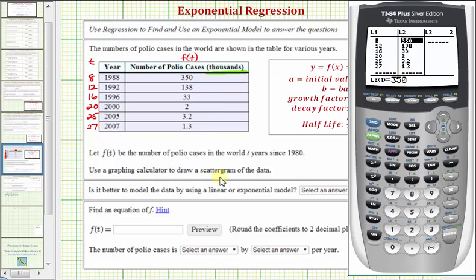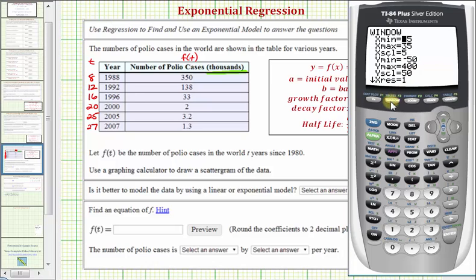Before we can graph the scattergram though, we do have to adjust the window, so these values will show on the coordinate plane. I've already done this to save time. If we press window, notice how the horizontal axis goes from negative 5 to 35. Notice all the t values are in this interval. And the vertical axis goes from negative 50 to 400. Notice all of these values are in that interval.